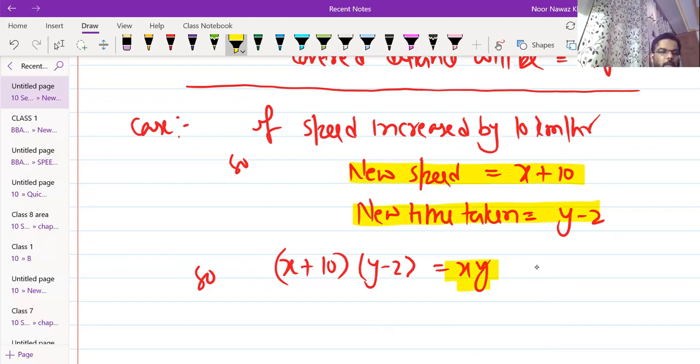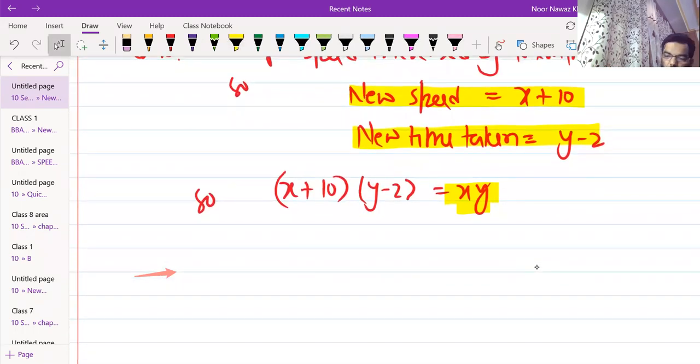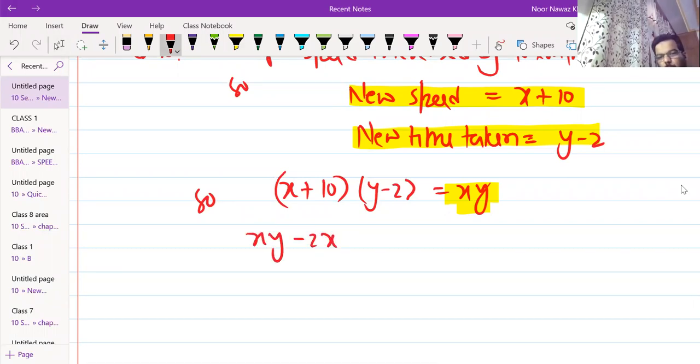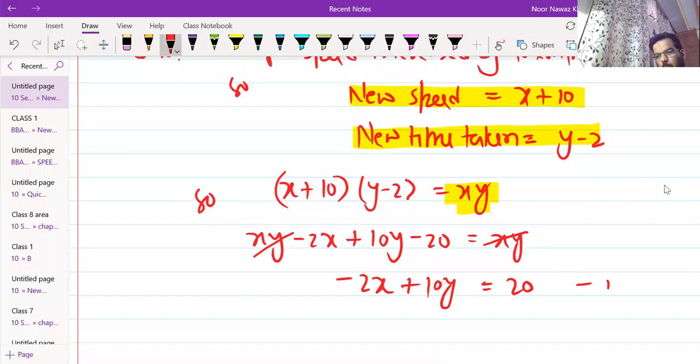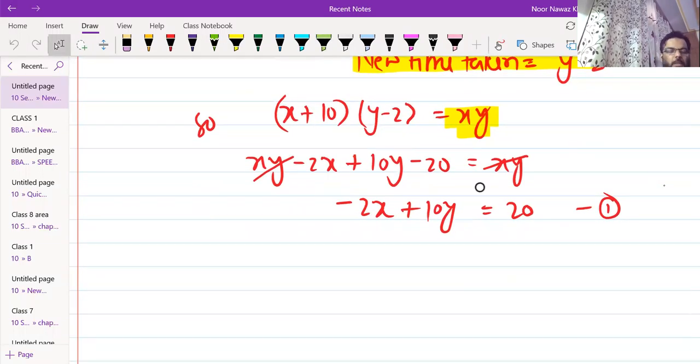Speed into time is equals to distance. You can go to school, but distance changes. If you go to x, y, then it will remain the same, xy. But this is our equation. X plus 10 into y minus 2 equals xy. XY minus 2x plus 10y minus 20 is xy. XY cancel. Minus 2x plus 10y is equals to 20. If you divide by two, it will be minus x plus 5y equals 10, that's your first equation.